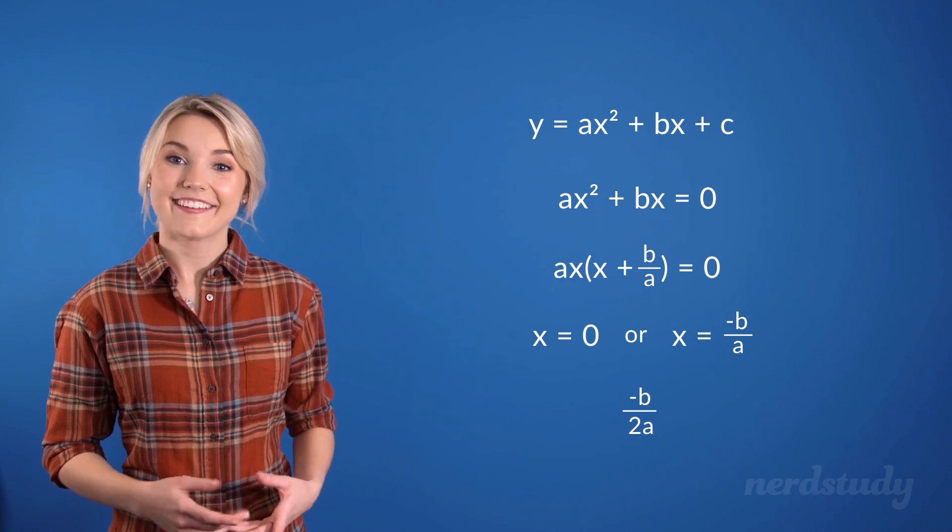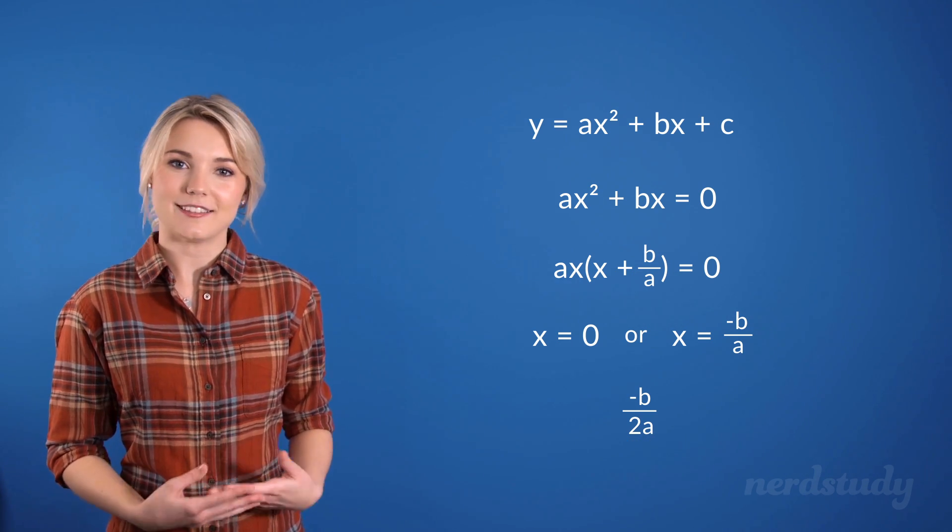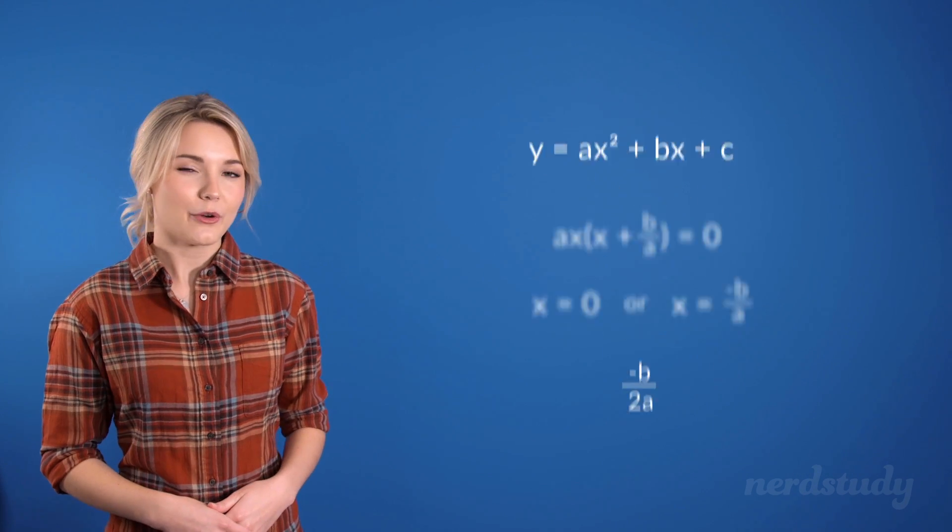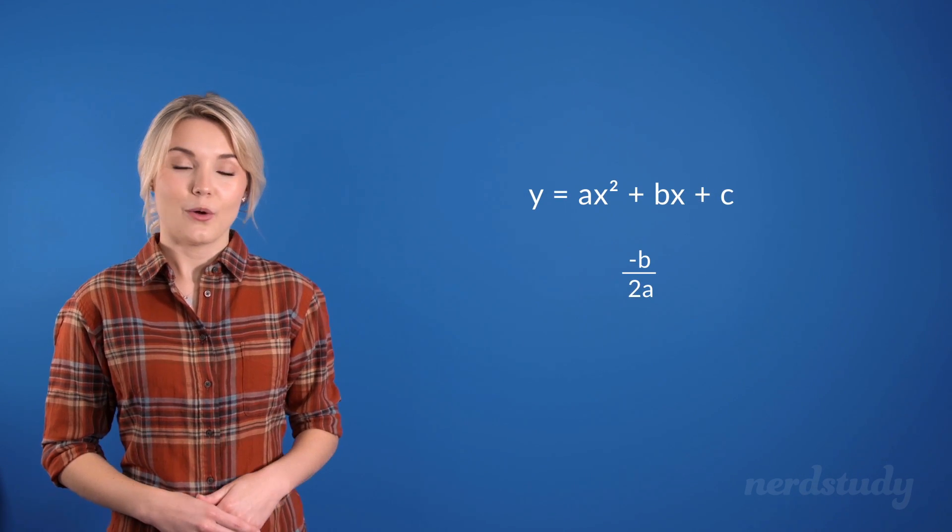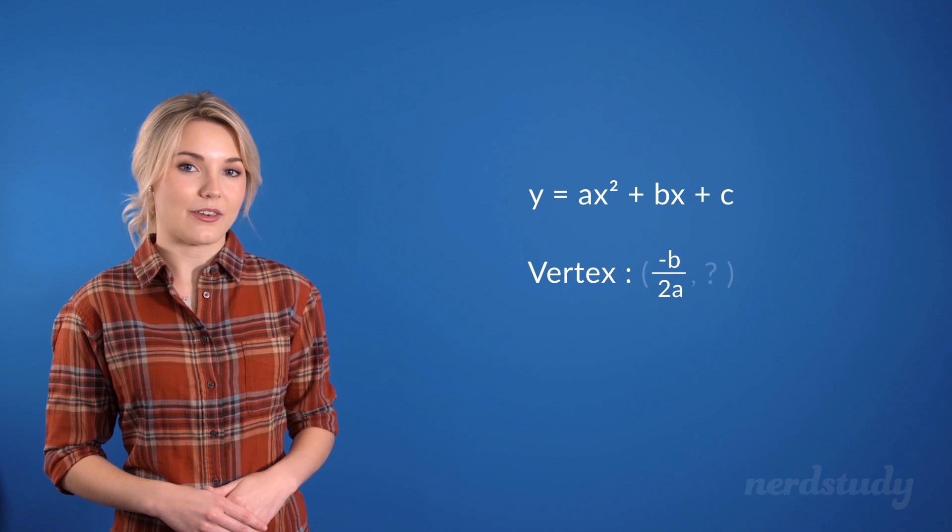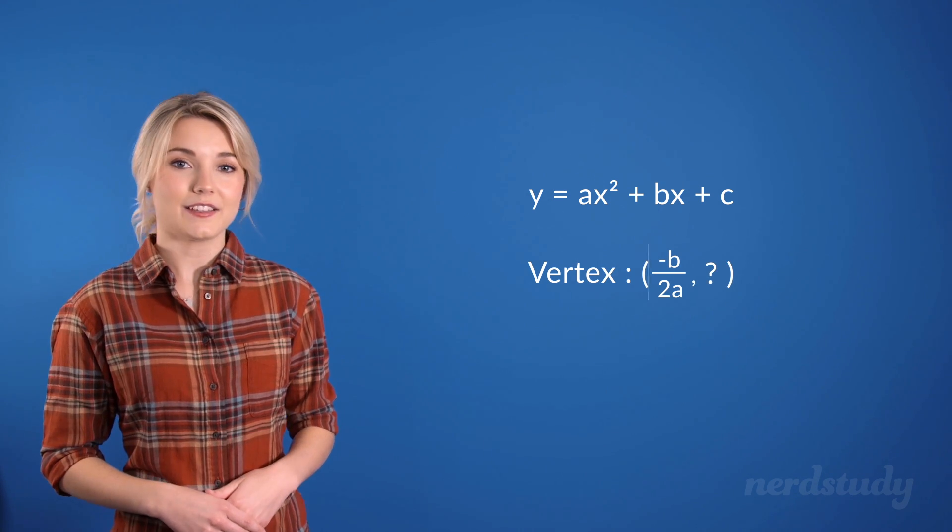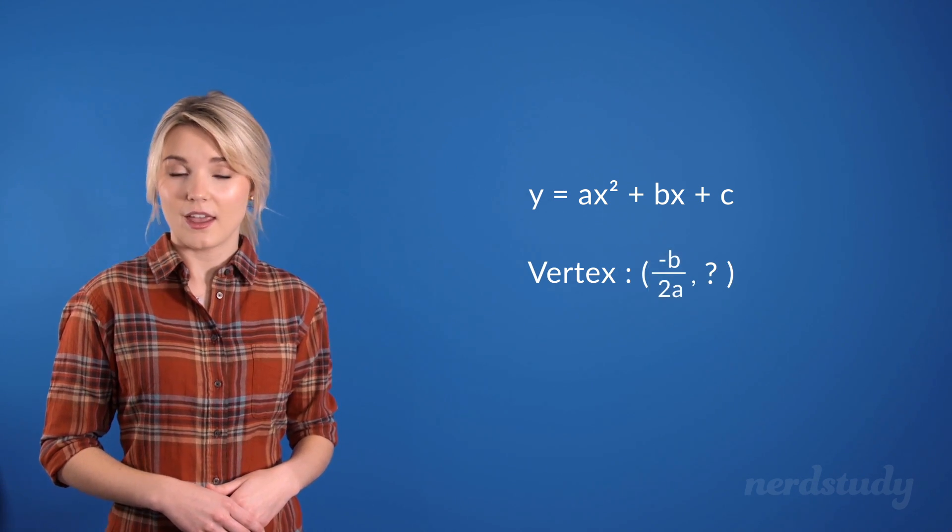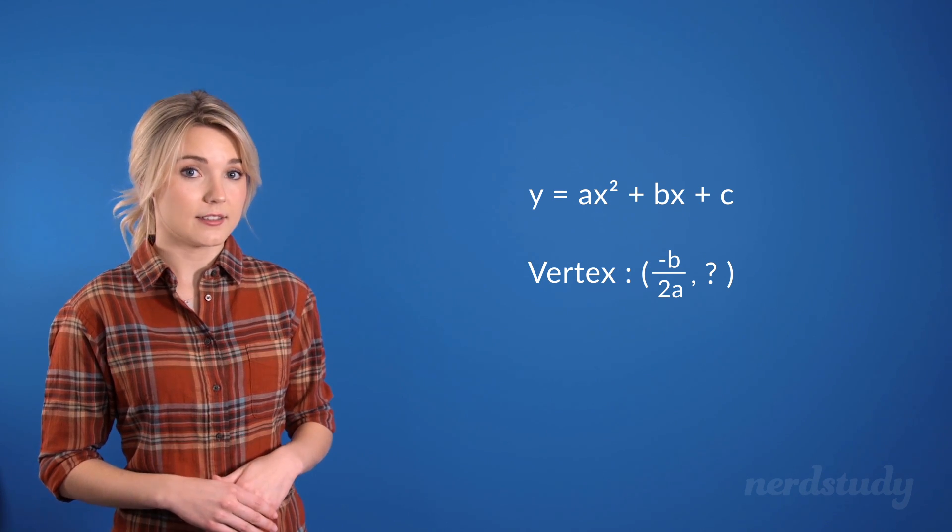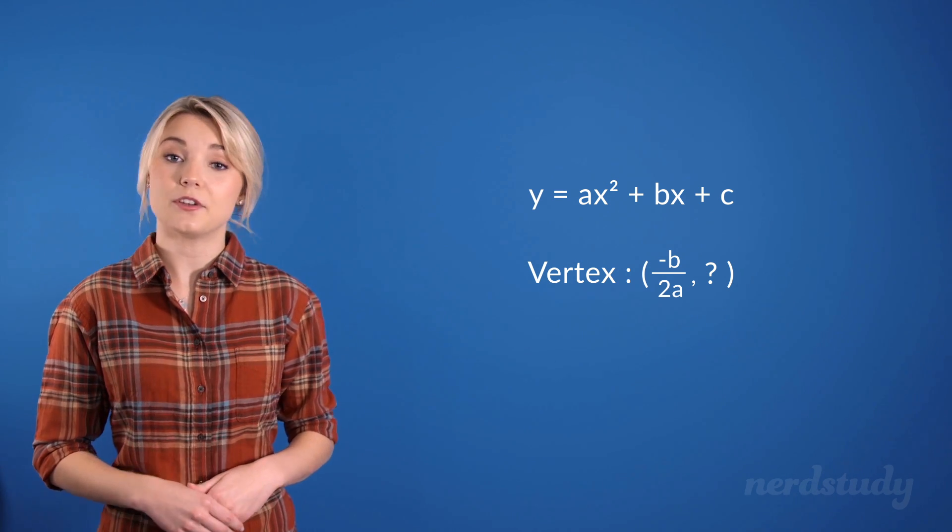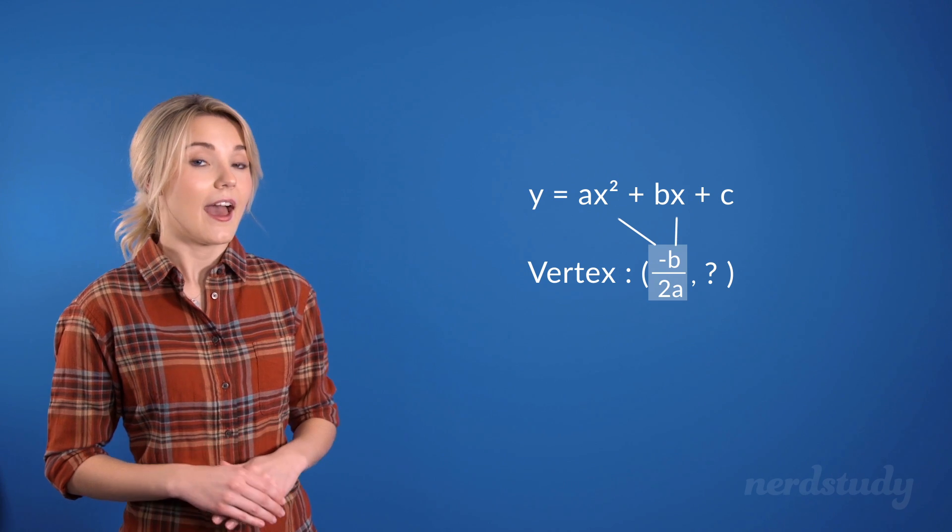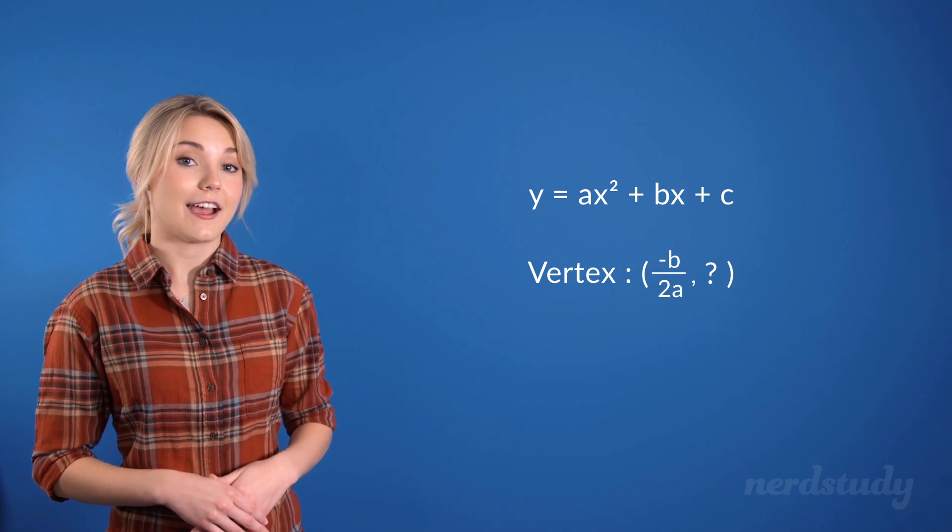So what we figured out from doing the general example is this. When we have an equation in the standard form, we can get the vertex's x value by simply computing minus b divided by 2a. And if we wanted the full vertex, then all we need to do is substitute minus b over 2a as x, and we'd get the vertex's y value. Pretty cool, right?